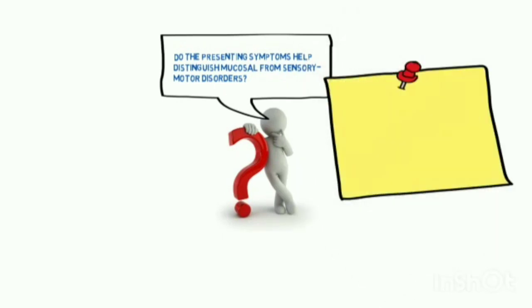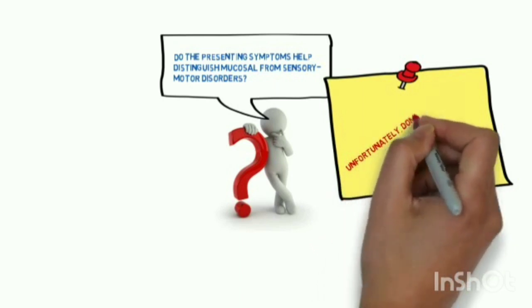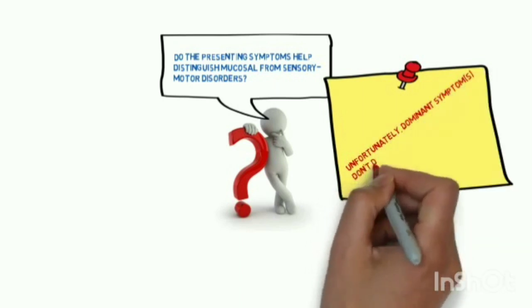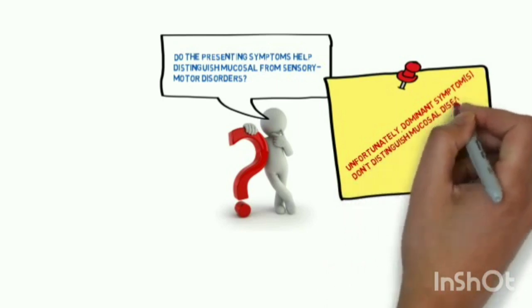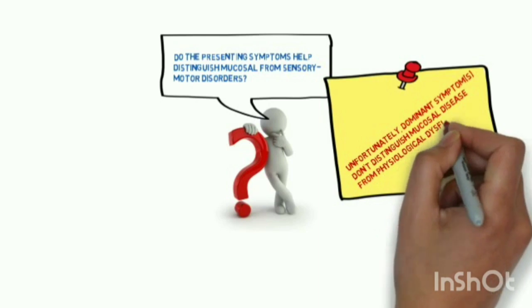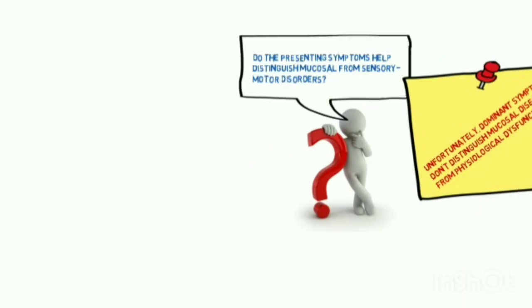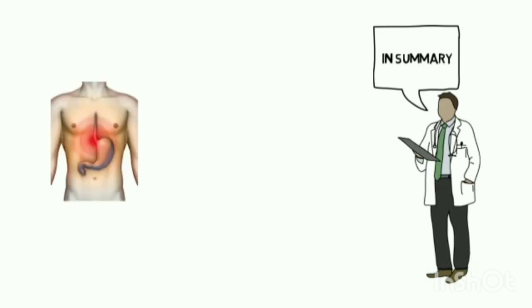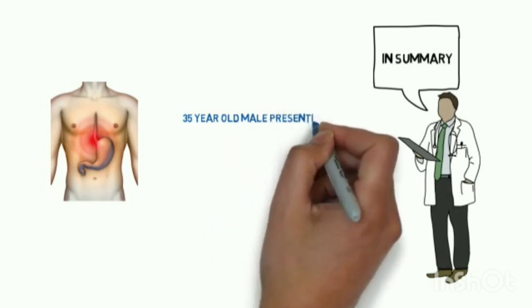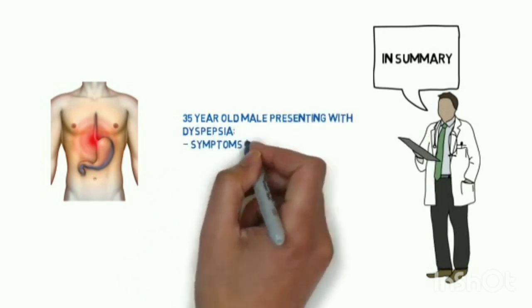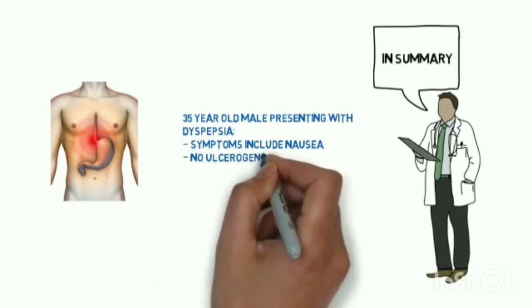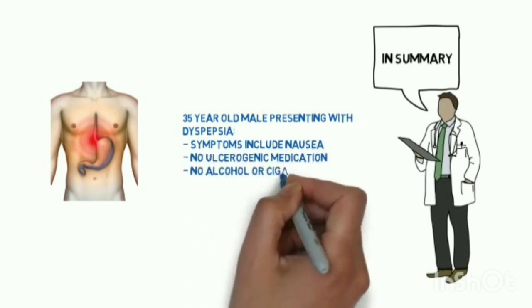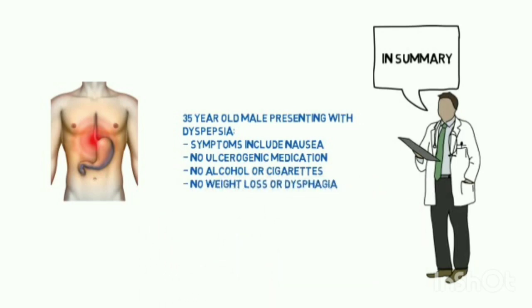Unfortunately, dominant symptoms do not distinguish mucosal disease from physiological dysfunctioning. In summary, in this case — a 35-year-old male presenting with dyspepsia symptoms including nausea — there is no ulcerogenic medication, no alcohol or cigarettes, and no weight loss. Thank you.